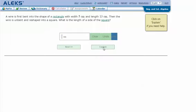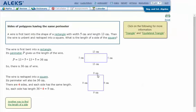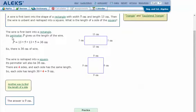Let's click explain. The wire is first bent into a rectangle. Its perimeter gives us the length of the wire.